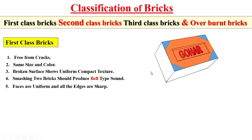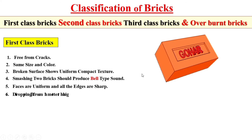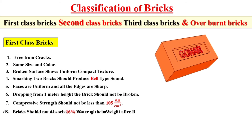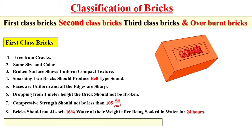The faces of the first class brick should be uniform and all edges very sharp. When dropped from one meter height, the first class brick should not break. The compressive strength should not be less than 105 kg per square centimeter. The brick should not absorb more than 16 percent of water of its weight after being soaked in water for 24 hours.